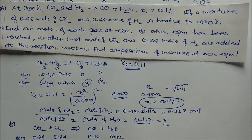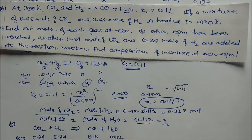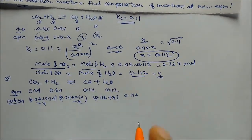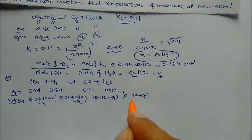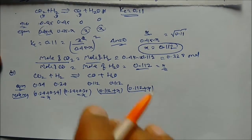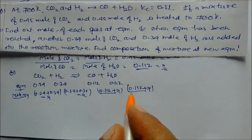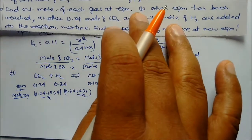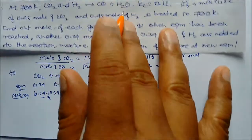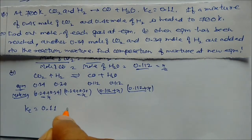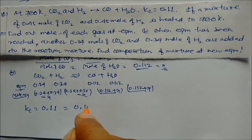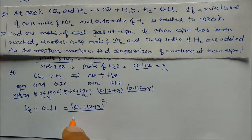At new equilibrium: CO₂ = 0.678 − x, H₂ = 0.678 − x, CO = 0.112 + x, H₂O = 0.112 + x. Kc = 0.11 = (0.112 + x)² / (0.678 − x)². On solving, x = 0.635.